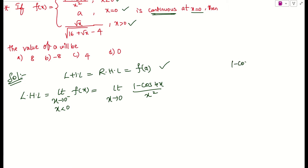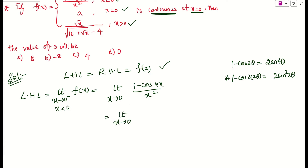If you check carefully, we have the formula 1 - cos2θ = 2sin²θ. Here in place of 2θ we have 4x, so 1 - cos4x = 2sin²(2x). I will apply the same formula here. So the limit x tends to 0 becomes 2sin²(2x) / x².